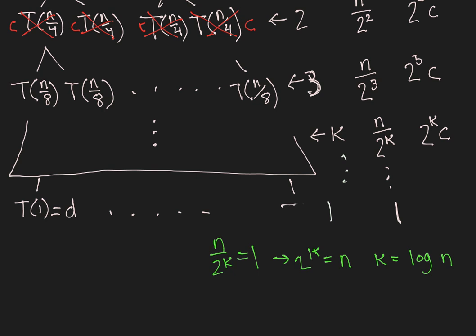When k is log of n, we're representing t of 1, and there are 2 to the log of n nodes, each of the value d. Now we know everything about this tree.